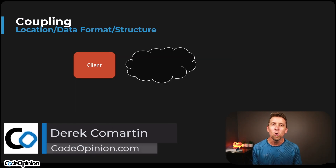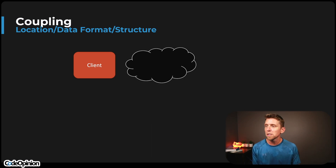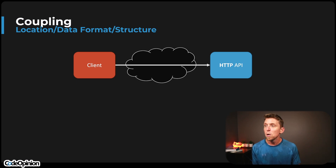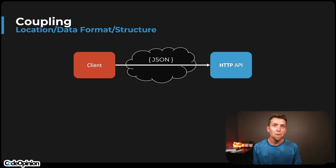It's Derek O'Martin from CodeOpinion.com. For example, this is how I think people typically think of microservices. So we have one service which is a client, there's another service that's exposing some HTTP API, we're making that HTTP call, we're exchanging JSON — and this is what we're doing.